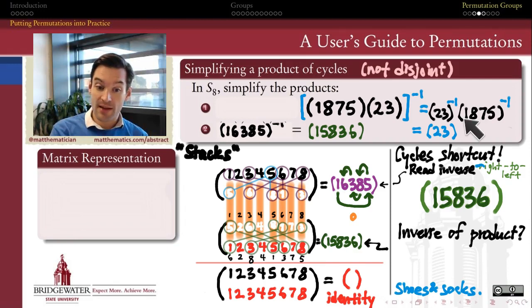Then the inverse of (1,8,7,5). I can just read this 4 cycle backwards to get (1,5,7,8). And there's the inverse of that product.